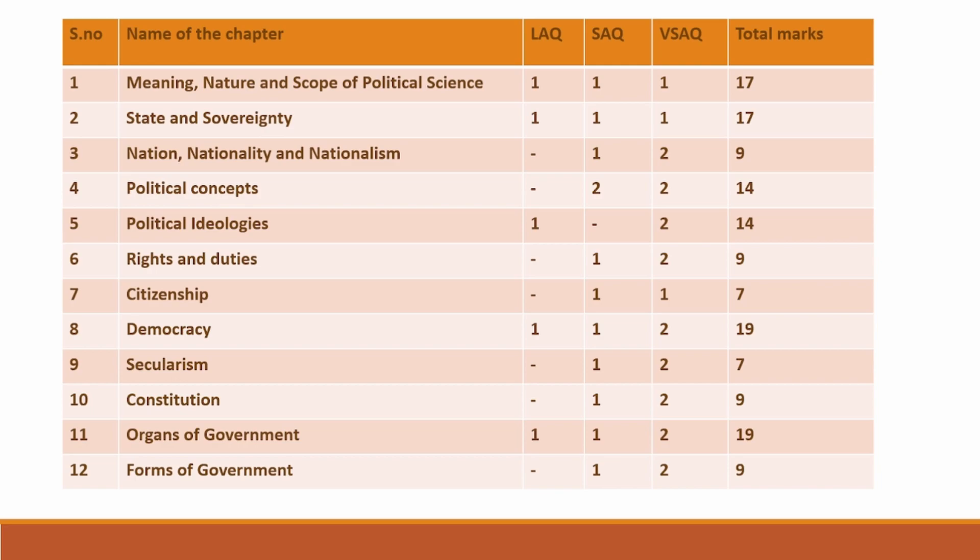Chapter 5: Political Ideologies. You will get 1 LAQ and 2 VSAQs from this chapter. The weightage for this chapter is 14 marks. Chapter 6: Rights and Duties. You will get 1 SAQ and 2 VSAQs from this chapter. The weightage for this chapter is 9 marks.